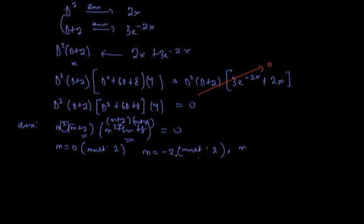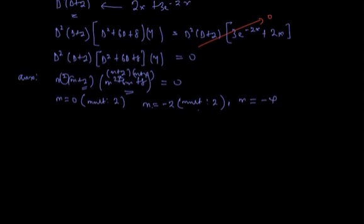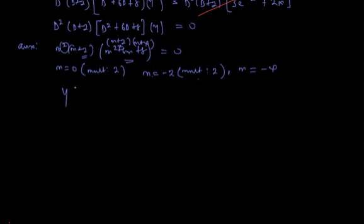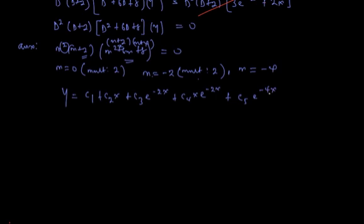We also have m = -4 from the factorization. Based on all the roots, the general solution of the homogeneous system is y = (c₁ + c₂x) + c₃e^(-2x) + c₄xe^(-2x) + c₅e^(-4x).